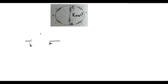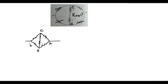A resistance small r is between B and C, and between C and A there is another resistance small r. Between A and B there is a resistance, and between B and D there is another resistance small r. Between B and A there are two resistances small r, and between C and D there are also two resistances.